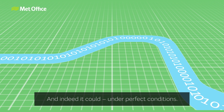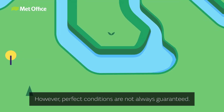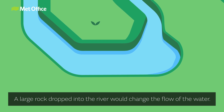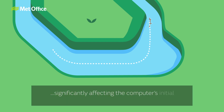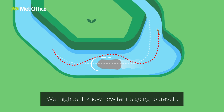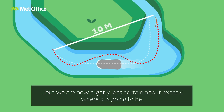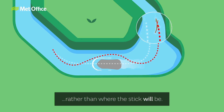However, perfect conditions are not always guaranteed. A large rock dropped into the river would change the flow of the water — only slightly at first, but that small change will pass down the river, significantly affecting the computer's initial prediction of where the stick will end up. We might still know how far it's going to travel, but we are now slightly less certain about exactly where it is going to be. At this point we have to start talking about where the stick is most likely to be, rather than where the stick will be.